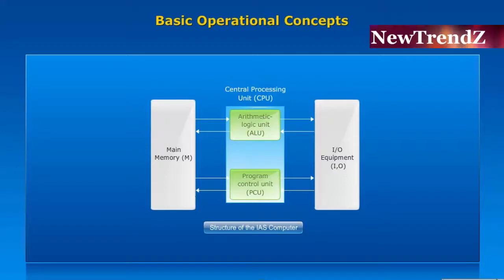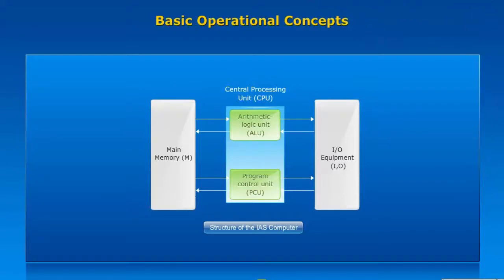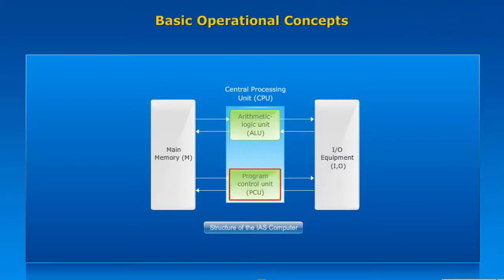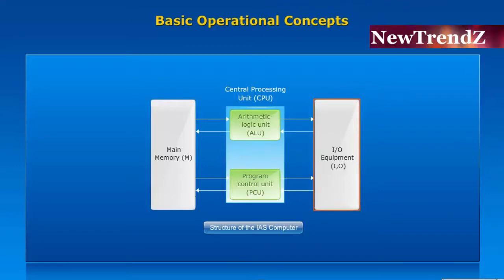The structure of the IAS computer is shown here. It consists of a main memory which stores both data and instructions, an arithmetic and logic unit (ALU), and a control unit which interprets the instructions in memory and causes them to be executed, along with input and output (I/O) equipment.